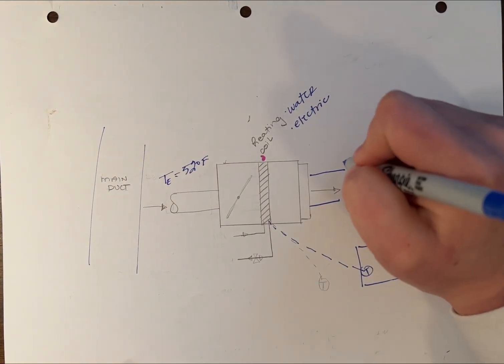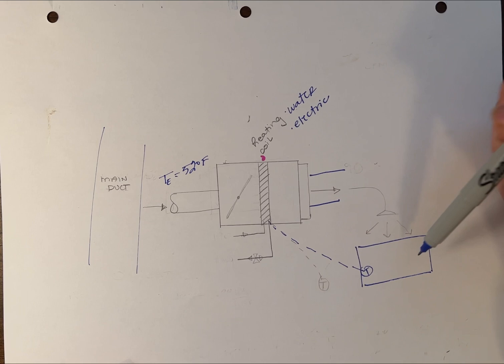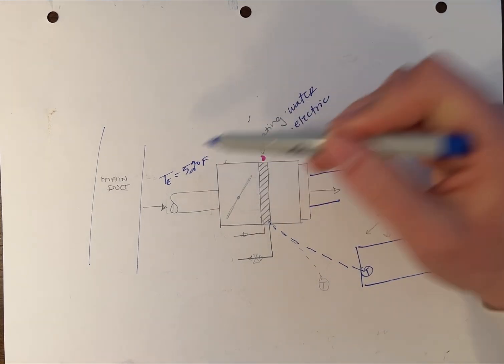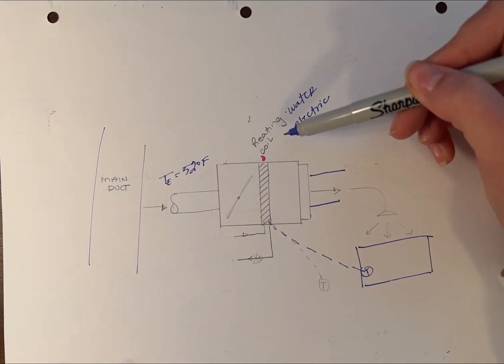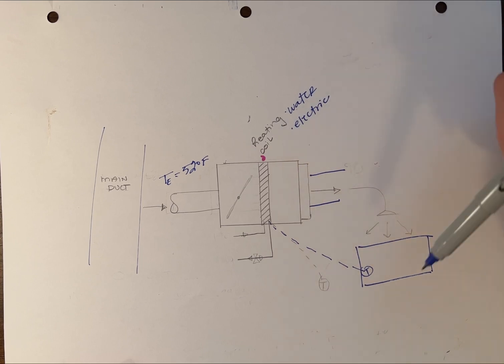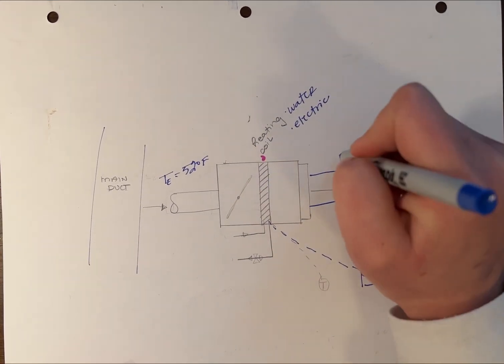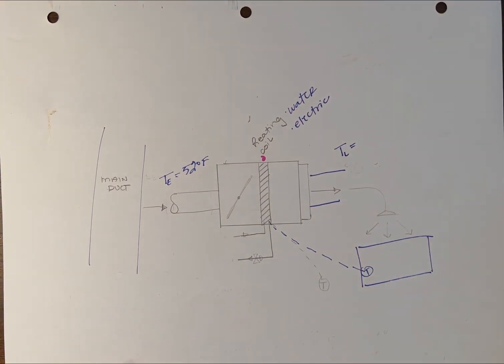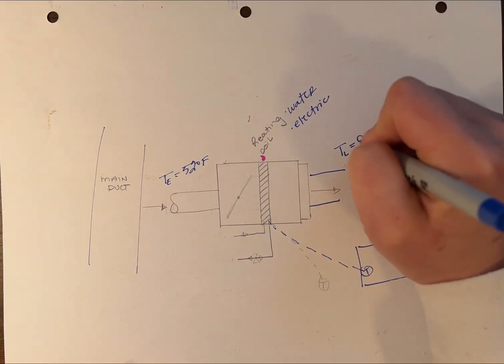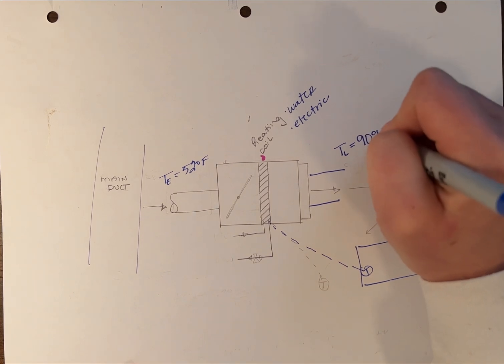Your discharge temperature in a space that's being cooled will be 52 degrees, so your heating coil won't be used. But if you're in heating mode, you'll need your heating coil operational with a leaving temperature around 90 degrees Fahrenheit.